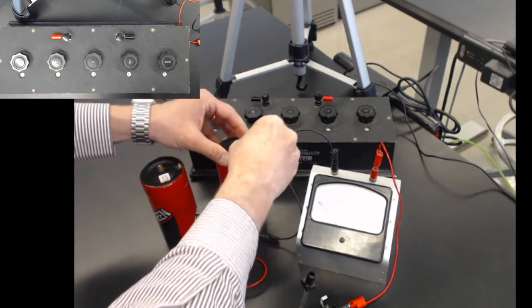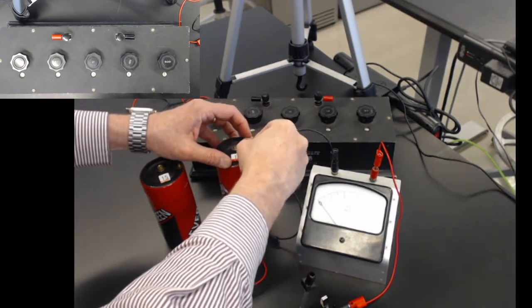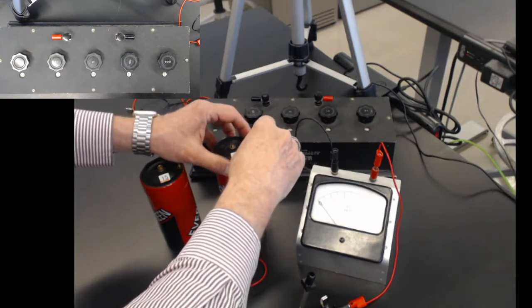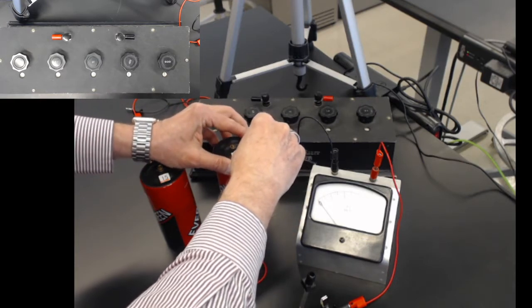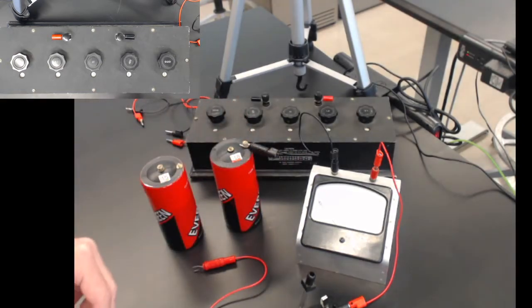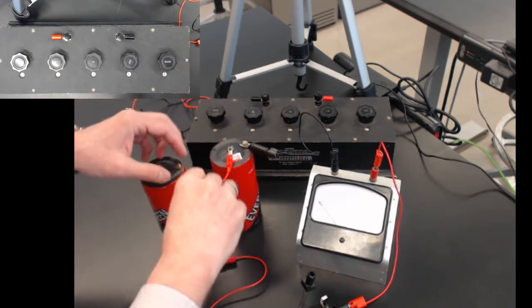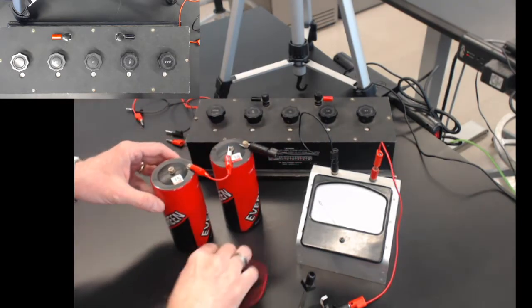I'll get this terminal post set up here. That's the negative end here. Then I'll take a jumper to clamp on here and put these in series.